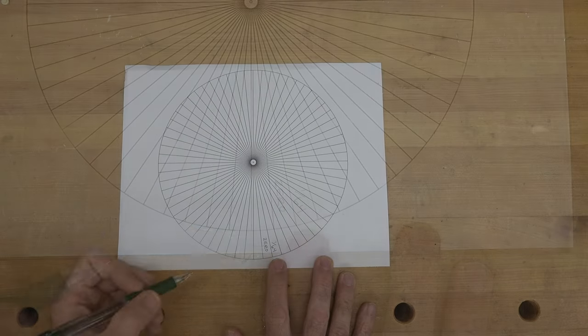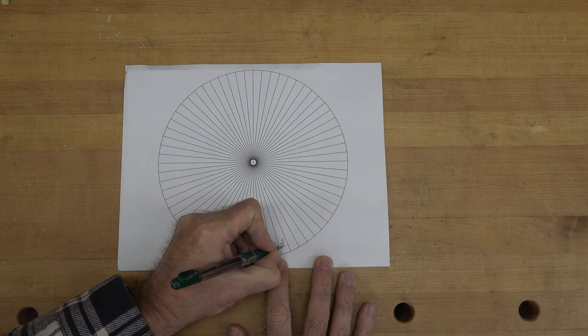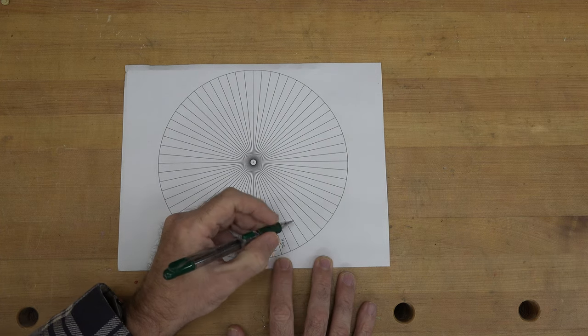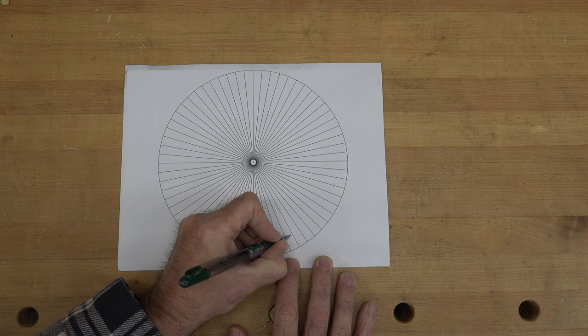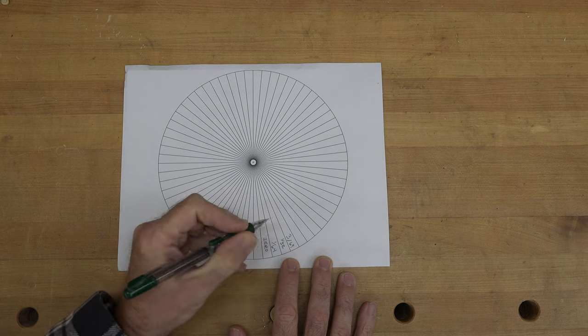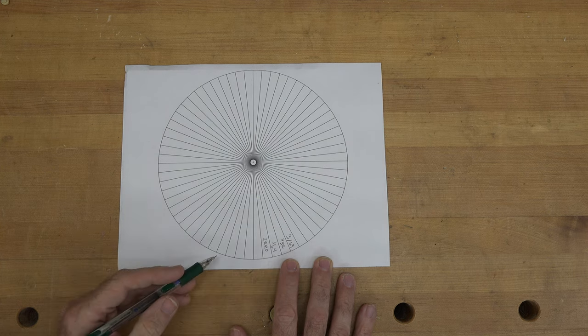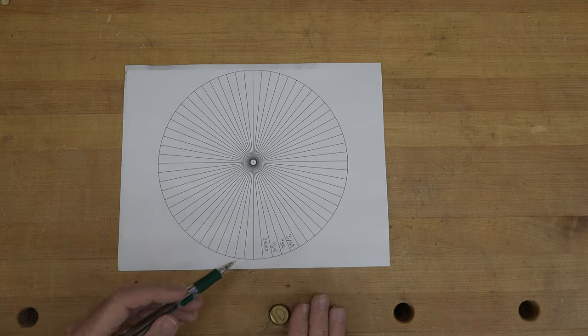So starting here we have 1/64th and then 1/32nd. Now just go around and do the rest of them. This is now 3/64ths and we'll carry on all the way around this circle until we get it marked out.